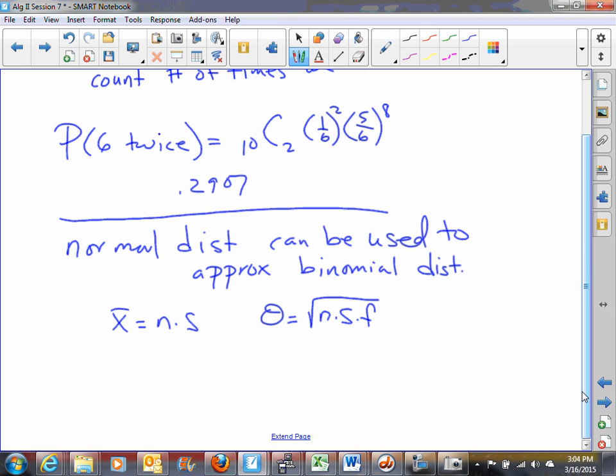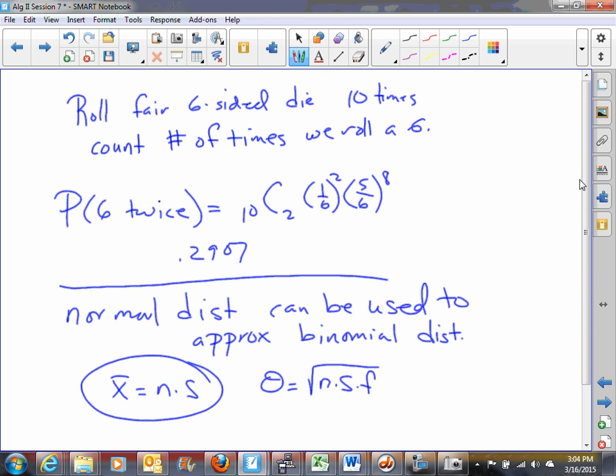By the way, this formula n s is also the, up here under the binomial distribution itself, the expected number of, the expected value is equal to n s as well. It turns out that the expected value does turn out to be, over a period of time, the average value. So n times s is also the expected value for the binomial distribution, then it's the mean for the normal approximation to the binomial distribution. And that pretty much takes care of the things that we need to see about the binomial distribution.